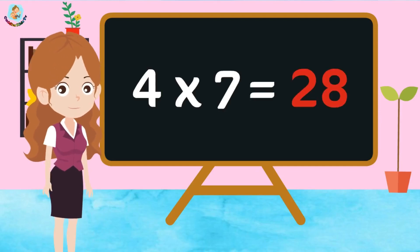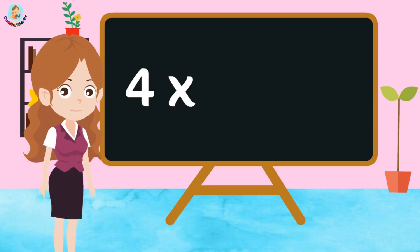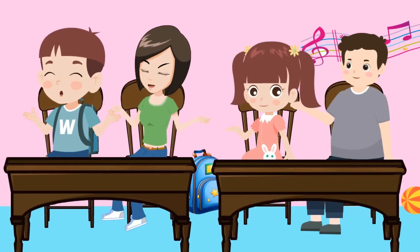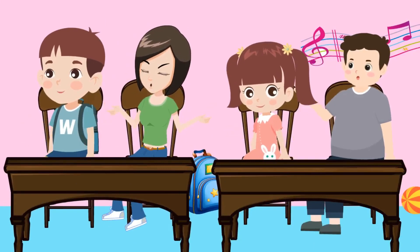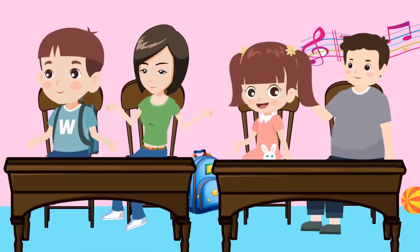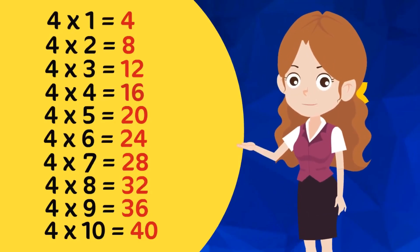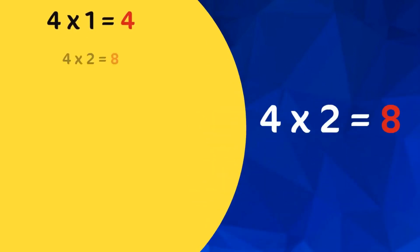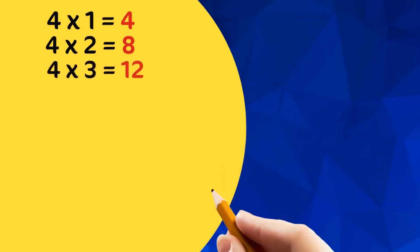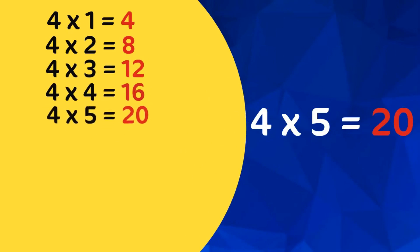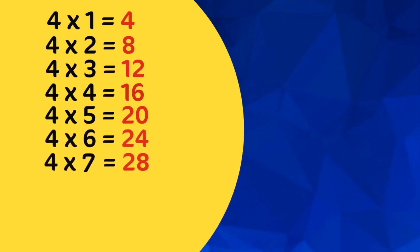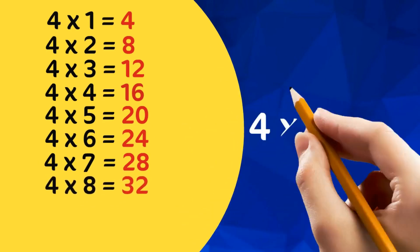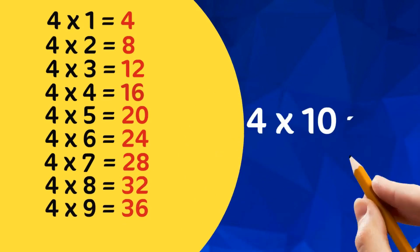4 7s are 28, 4 8s are 32, 4 9s are 36, 4 10s are 40. Now let's speak together. 4 1s are 4, 4 2s are 8, 4 3s are 12, 4 4s are 16, 4 5s are 20, 4 6s are 24, 4 7s are 28, 4 8s are 32, 4 9s are 36, 4 10s are 40.